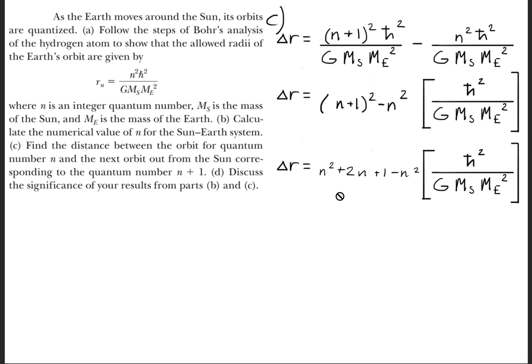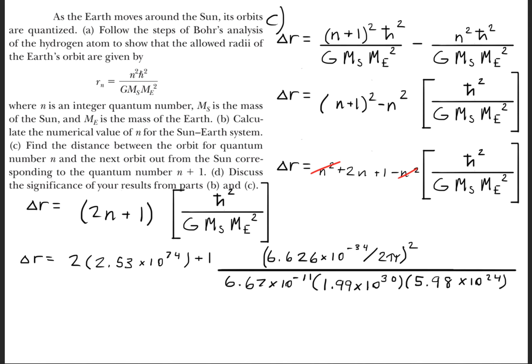We'll expand the binomial, n+1 squared, so we get n squared plus 2n plus 1. We can cancel the n squares, so we're left with the 2n plus 1 term. Now we can plug in the values for these variables.